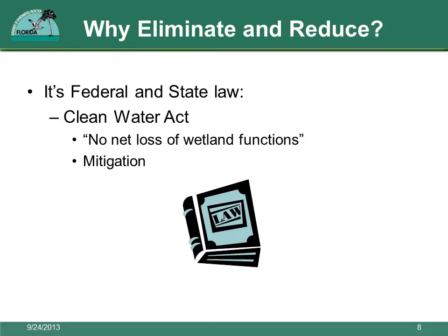You might think: if there can be no net loss of wetland functions, why are we allowed to fill any wetlands at all? Government agencies realize that sometimes wetland impacts are unavoidable. So if wetland impacts cannot be avoided, they can be compensated or made up for with mitigation. Mitigation is creating equal wetland functions somewhere else for the loss of wetland functions caused by filling a wetland. Please see our other video on mitigation for more information.